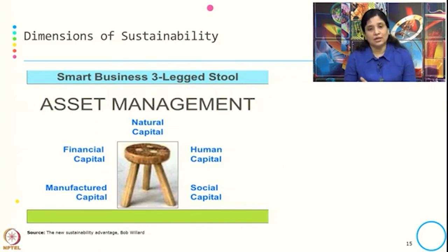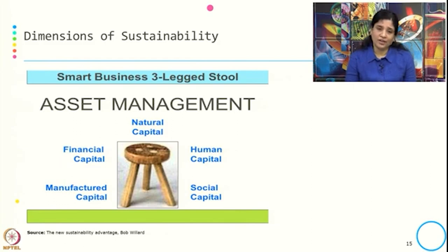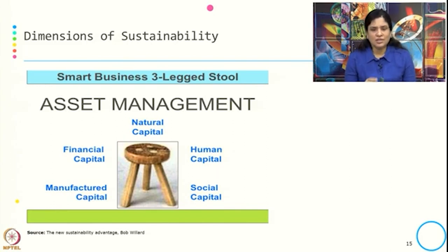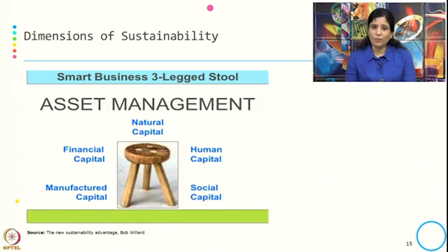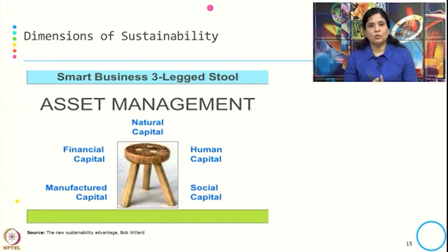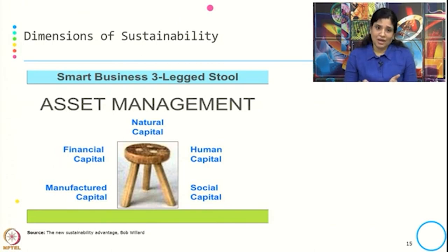Let us see how the different forms of capital are explained through this sustainability framework. When we define sustainability as the control and prudent use of all forms of capital, whether you follow a model of 3 E's or 3 P's, it is ultimately about how you manage the stock of assets — natural capital, human capital, social capital, financial capital, and manufactured capital. The management of these different forms of available capital is what sustainability is all about.